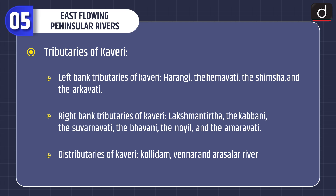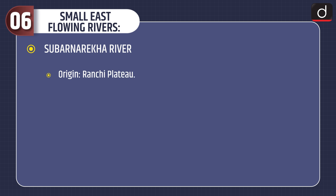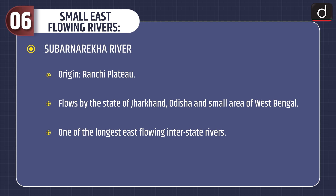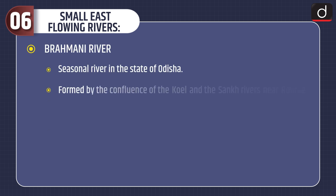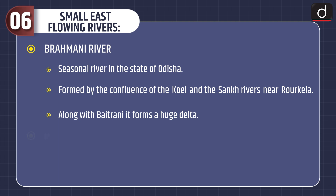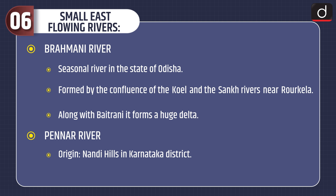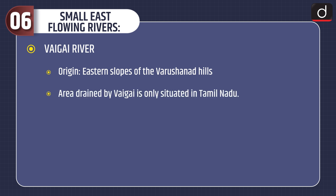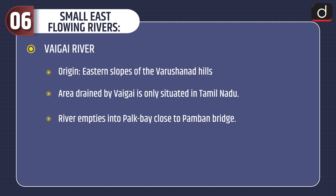Now let's discuss small east flowing rivers. Subarnarekha river: Origin in the Ranchi Plateau. It flows through Jharkhand, Odisha and a small area of West Bengal, and is one of the longest east flowing interstate rivers. Hundru Falls is situated on the Subarnarekha. Brahmani river: A seasonal river in Odisha, formed by the confluence of the Koel and the Sankh rivers near Rourkela. Along with the Baitarani, it forms a huge delta. Pennar river: Origin in Nandi Hills, Karnataka, with its basin in Andhra Pradesh and Karnataka. Vaigai river: Origin in the eastern slopes of the Varushanad Hills. It drains entirely within Tamil Nadu and empties into Palk Bay close to Pamban Bridge. Important tributaries: Suruliar and Manjalar.